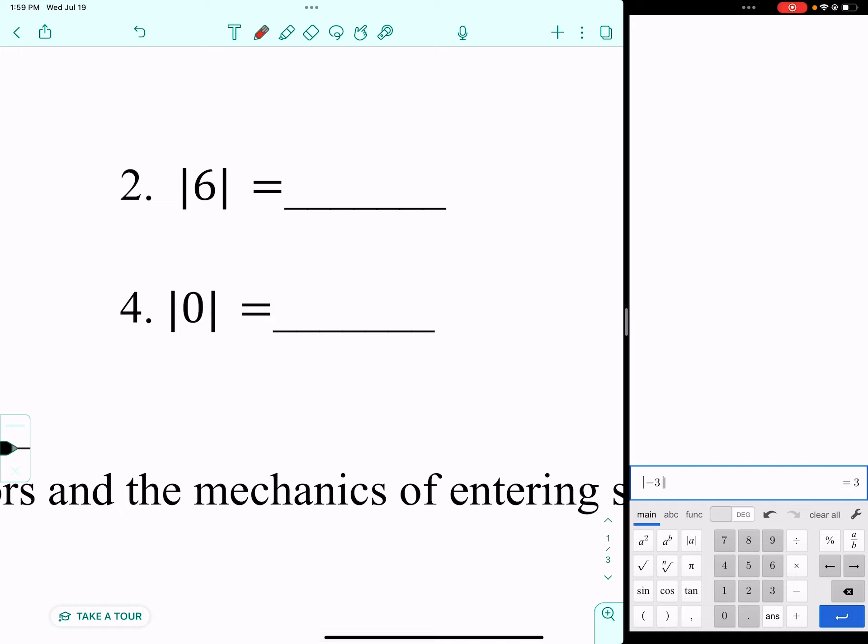If we go over to number 2, the absolute value of positive 6, well, I know that 6 is 6 jumps away from zero. But I want to make sure that I'm remembering that correctly. So I type into Desmos, and sure enough, it tells me that the absolute value is 6.